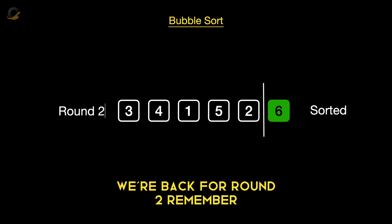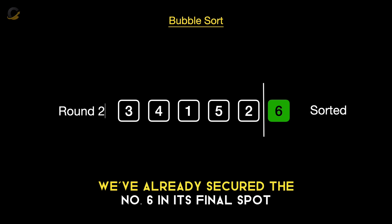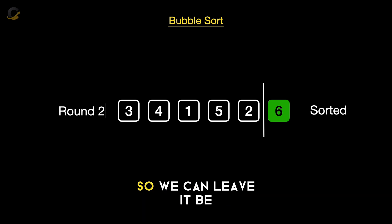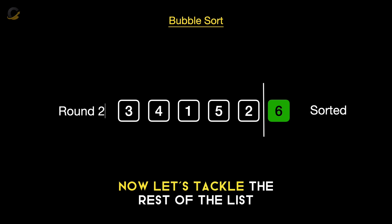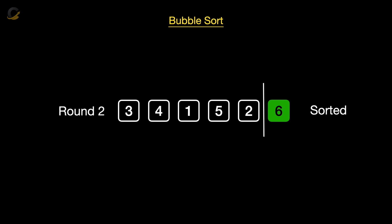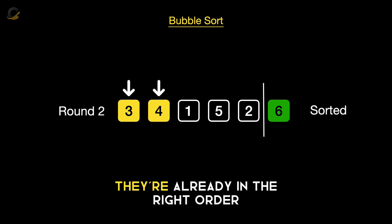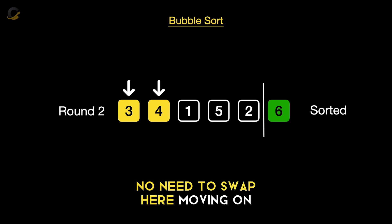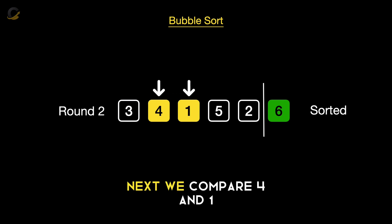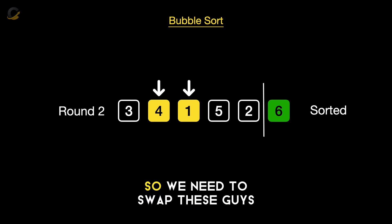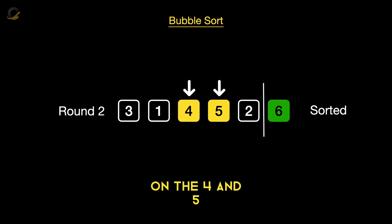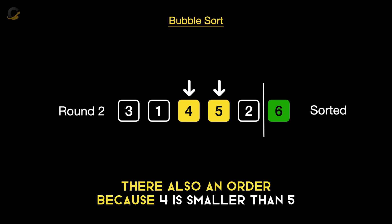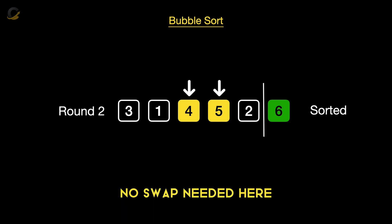We're back for round 2. Remember, we've already secured the number 6 in its final spot, so we can leave it be. Now let's tackle the rest of the list. First up, 3 and 4 — they're already in the right order, 3 is less than 4, no need to swap. Next, we compare 4 and 1. 4 is bigger than 1, so we need to swap. On to 4 and 5 — they're also in order because 4 is smaller than 5, no swap needed.